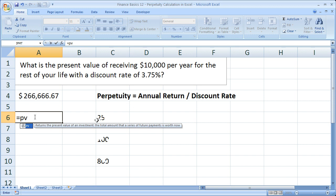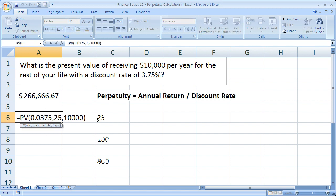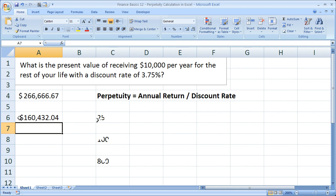So equals PV, open parentheses. The rate, simply 0.0375. Number of periods, 25. Payment, 10,000. All right, so for 25, let's go ahead and put the negative here. We get $160,432.